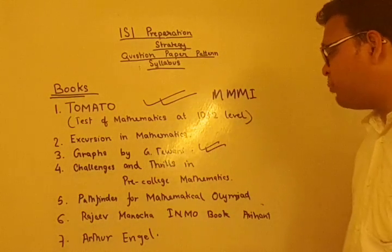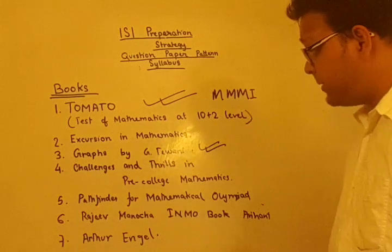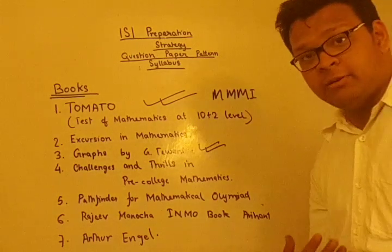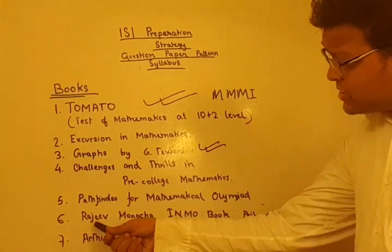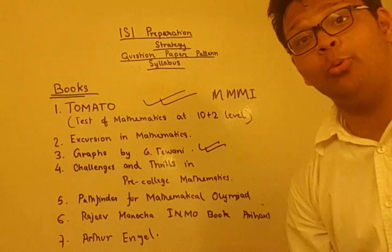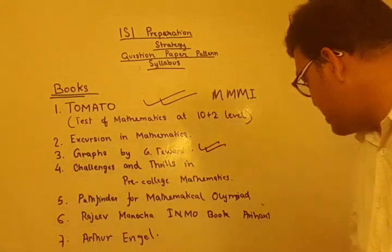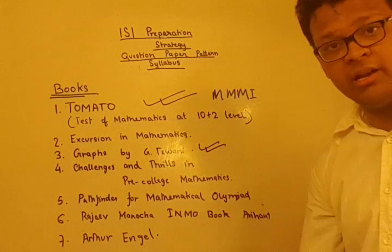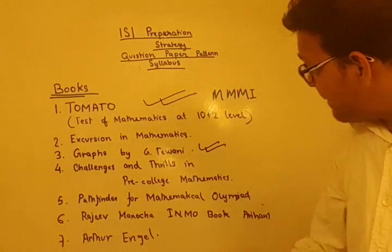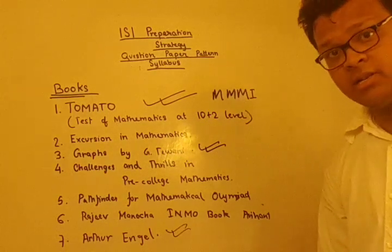The fifth book is the Pathfinder for Mathematical Olympiad — like a goldmine for ISI experience. The sixth is the INMO book by Rajiv Manocha, published by Arihant, which has very quality questions. The seventh is Problem Solving Strategies by Arthur Engel — one of the most important books that every ISI aspirant must have.